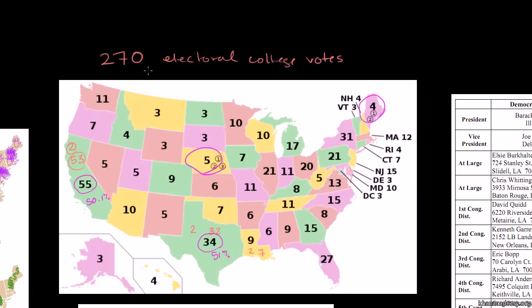If no candidate is able to hit the threshold of 270 electoral college votes, then it will go to the US House of Representatives. And it's interesting, because it isn't one representative, one vote. What will happen is the representatives in each state will vote together, and each state will get only one vote.